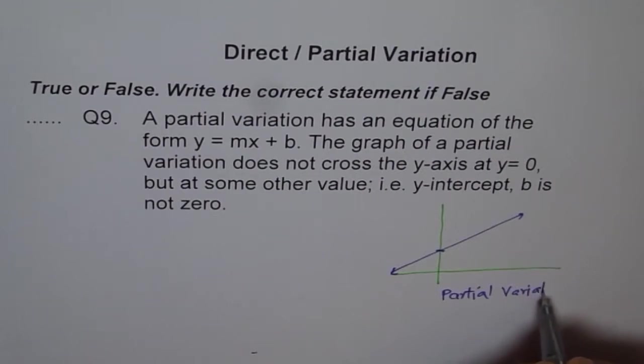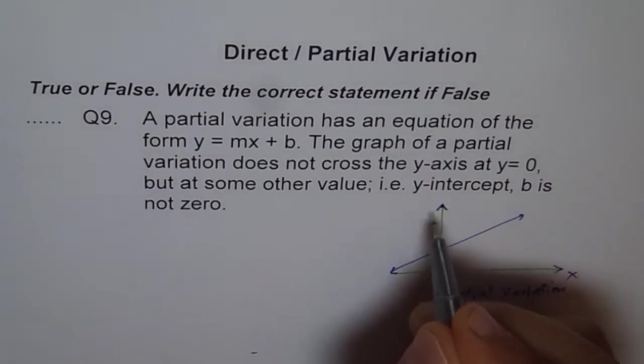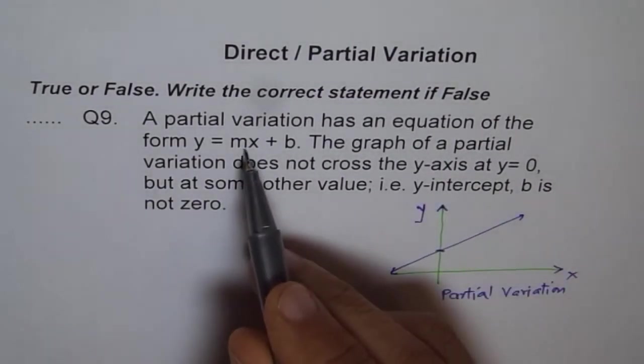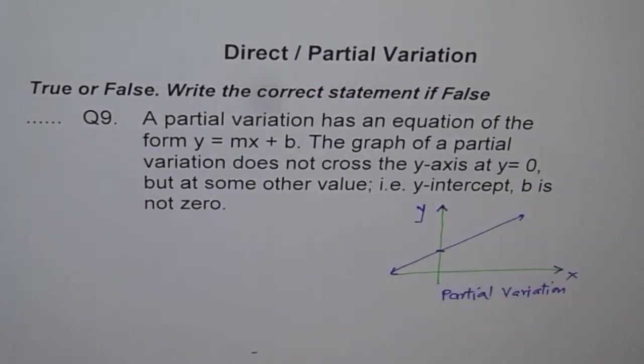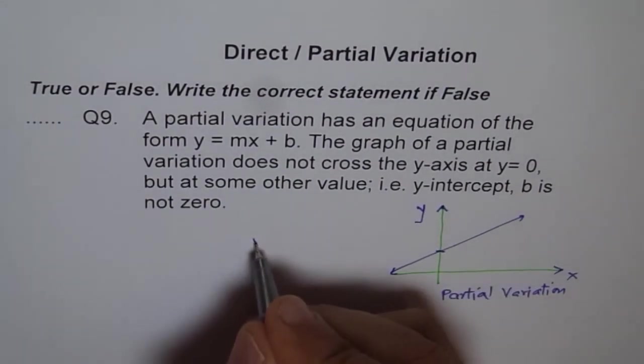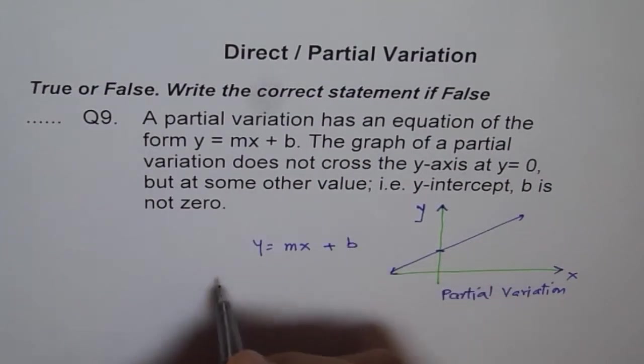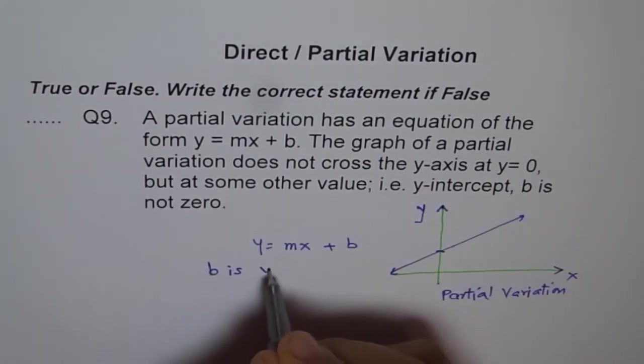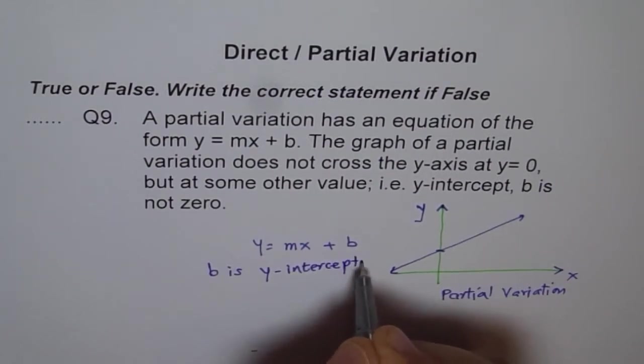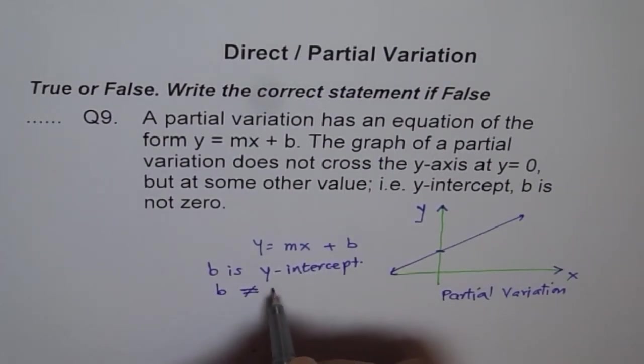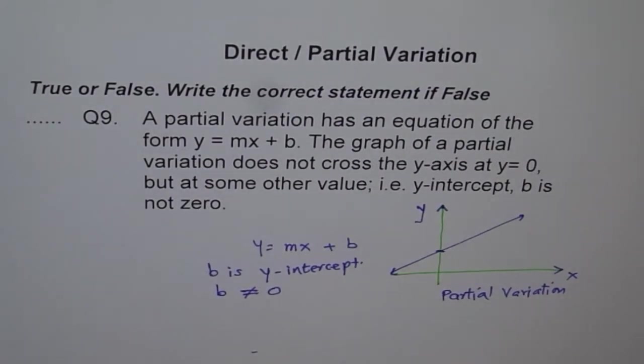This is your independent variable x, and that is your dependent variable y. And m represents slope of the line. So here, y equals mx plus b, where b is y-intercept. And b is not equal to 0. That is what partial variation is.